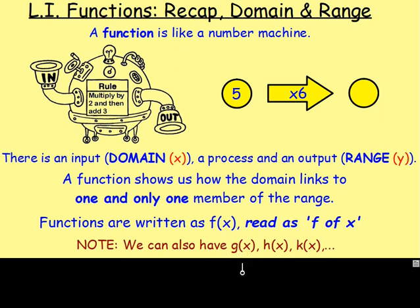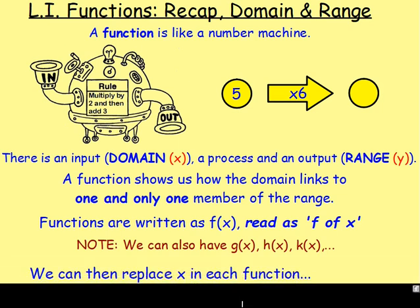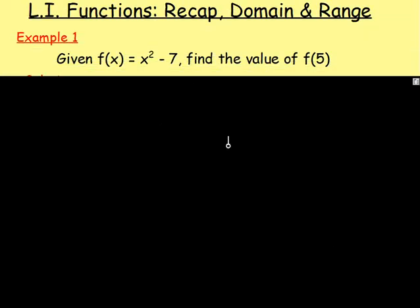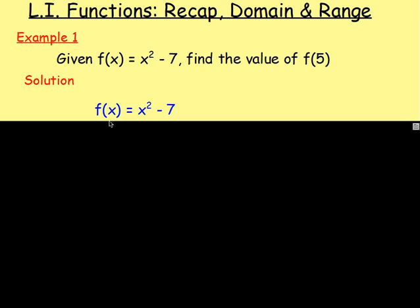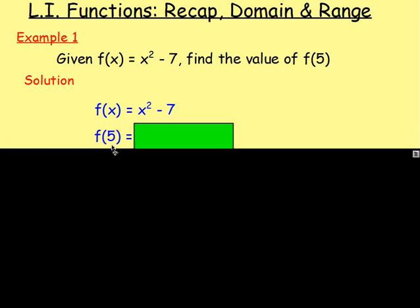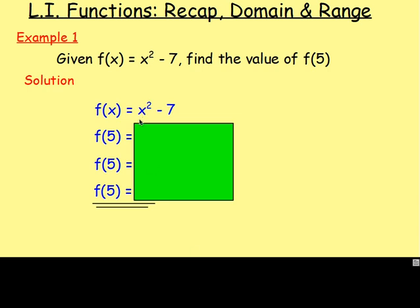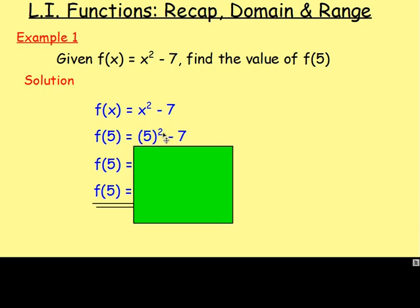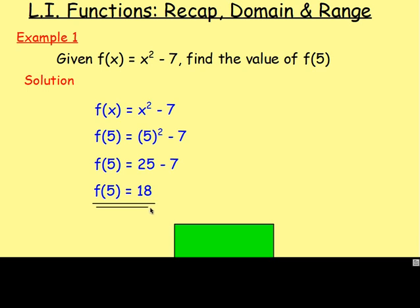Just put a letter in front of it — h of x, g of x, and so on. Really from there, you can then replace x in each function. Quick recap: last year you were given f of x equals x squared minus 7 and you had to find the value of f of 5. The way you did that is you started off with your function f of x equals x squared minus 7 and you wanted to replace x with 5. So on the right hand side, wherever you see an x, replace it with 5. Instead of x squared, we've got 5 squared, and then the minus 7 stays as it is. 5 squared is 25, take away 7, gives us 18.